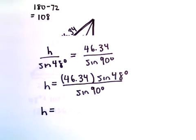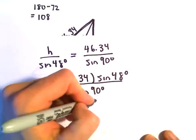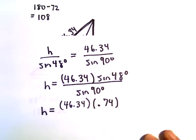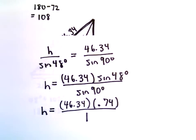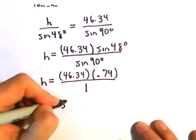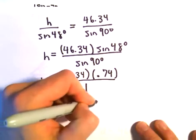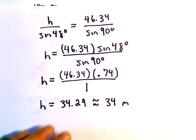Let's get a value here for sine of 48 degrees. I'm getting sine of 48 degrees to be .74 after rounding. Sine of 90 degrees, we know that that's just equal to 1. So now, all we have to do is take .74, multiply that by 46.34, and I am getting the value 34.29, or roughly equal to 34 meters tall. It would be the height of the pole.